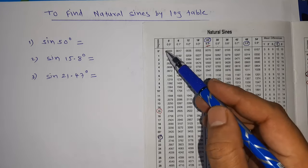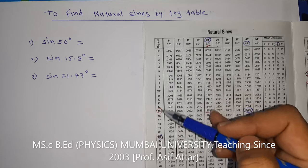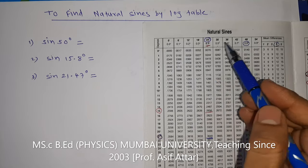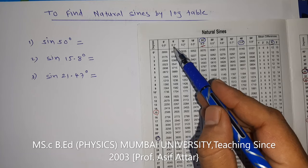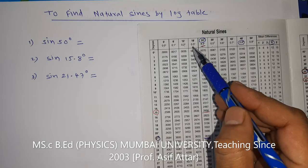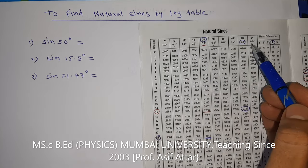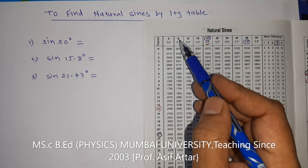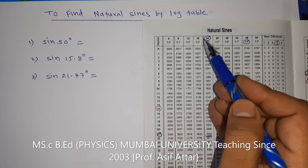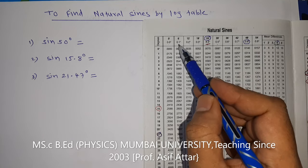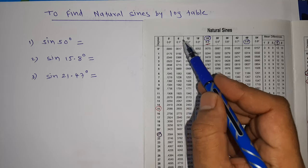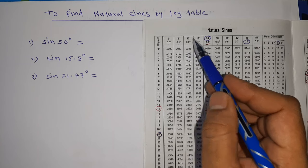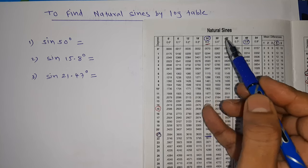See here in the natural sines table, it shows degrees here. 0.0°, 0.1°, 0.2°, 0.3°, maximum 0.9°. Above these values it is given in minutes: 6 minutes, 12 minutes, 18 minutes and so on. That means 0.1° is 6 minutes, 0.2° is 12 minutes, 0.3° is 18 minutes and so on.